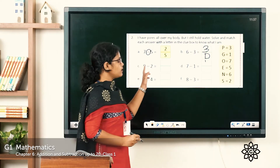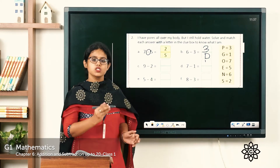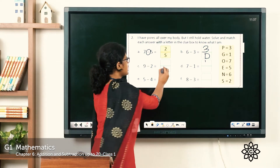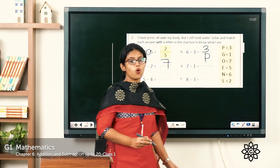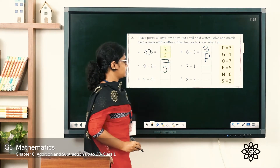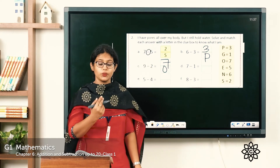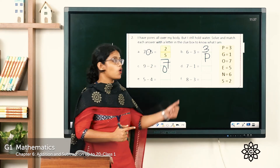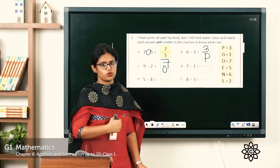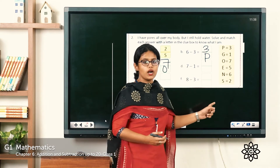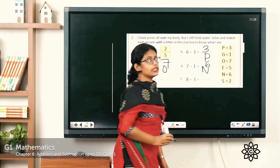Next, 9 minus 2 — draw 9 sticks and cut 2. The answer is 7, and the letter for 7 is O. Write O here. Then 7 minus 1 — when you subtract 1 from any number, you get the number just before. So 7 minus 1 equals 6, and the letter for 6 is N. Write N here.